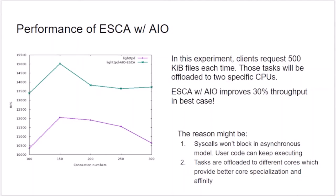We measure the performance of ECOS with AIO by deploying it to Lighttpd. Clients request files of 500 KB each time. Tasks are offloaded to two specific CPUs. We found ECOS with AIO improves performance by up to 30%. The reason is that system calls do not block in the asynchronous model, so the user-level procedure can keep executing, and tasks are offloaded to different cores, providing better core specialization and affinity.